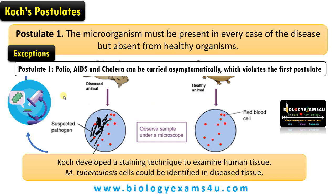Polio, AIDS, and cholera can be carried asymptomatically without any symptoms, which violates the first principle. Koch himself did work on cholera and found that there are many asymptomatic carriers, so he even considered modifying or relaxing this first postulate because of his discoveries in studies with cholera.